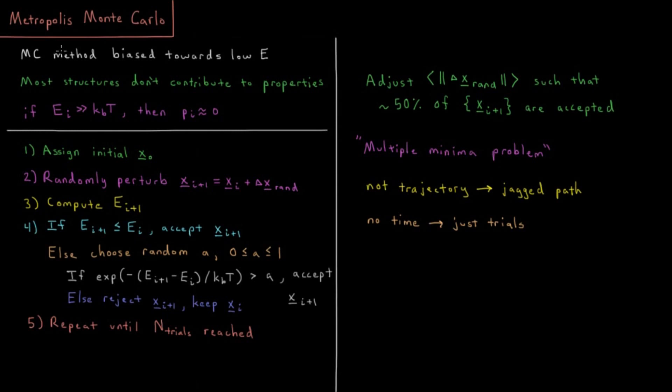All configurations are pretty much equally likely when randomly choosing coordinates, and most structures don't contribute to average properties. The structures that contribute most strongly to average energy, average bond lengths, and average positions are low energy structures which are much more likely to be observed for the system. They have higher probabilities because they have larger Boltzmann factors.